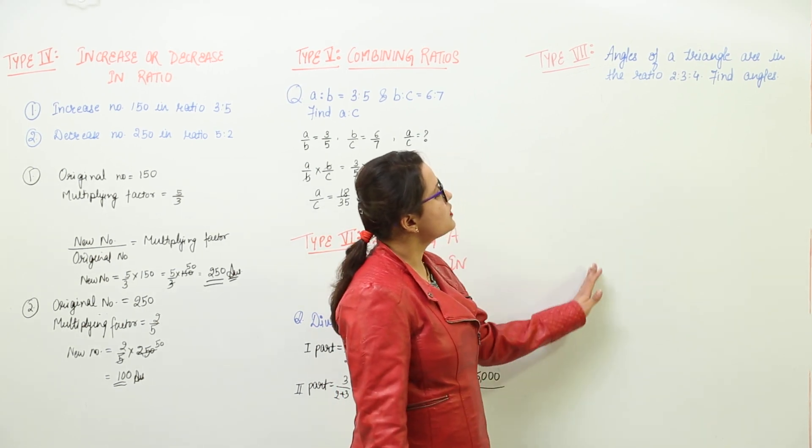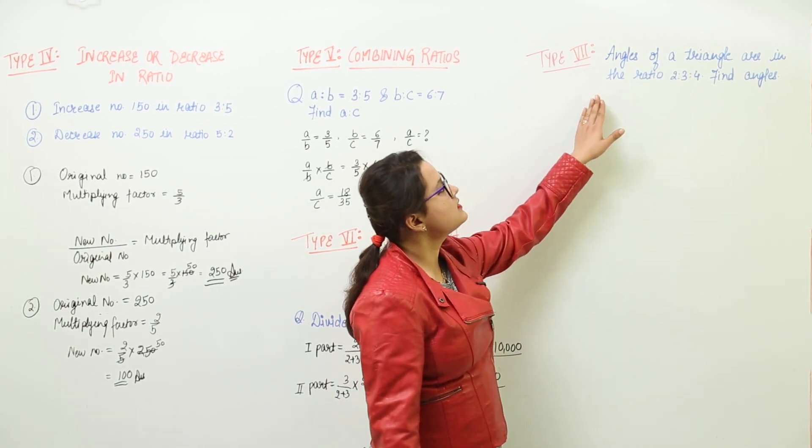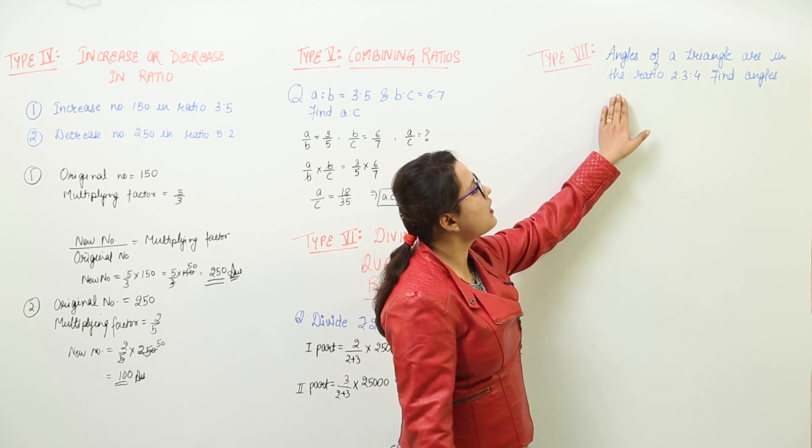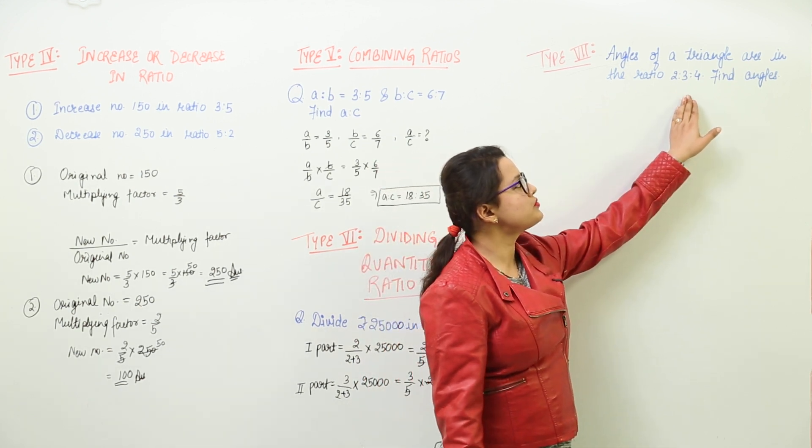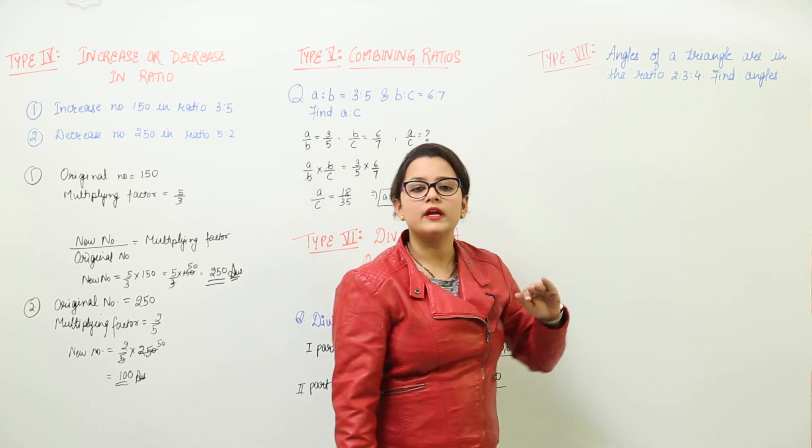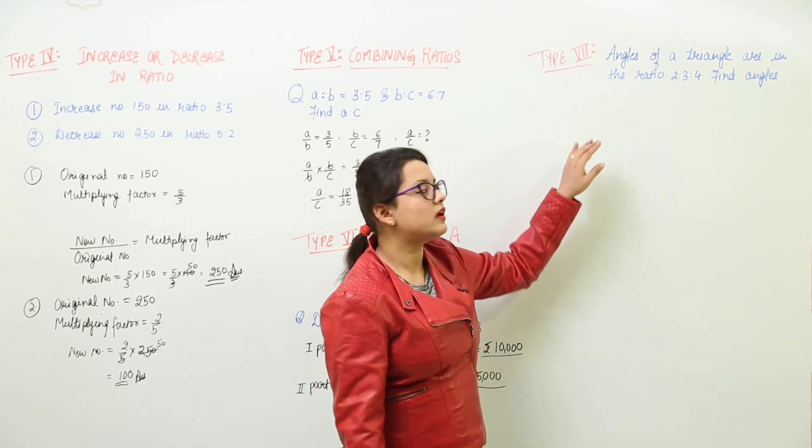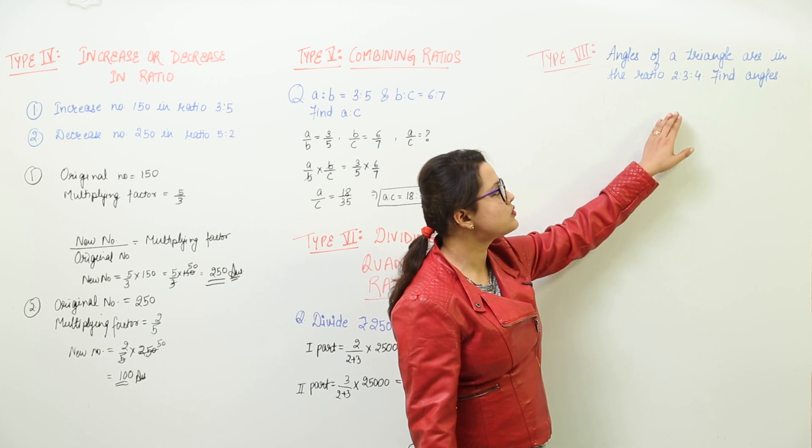Now the last type of questions are such that when angles of a triangle are in the ratio 2 is to 3 is to 4. A triangle has 3 angles and the 3 angles are in the ratio 2:3:4.